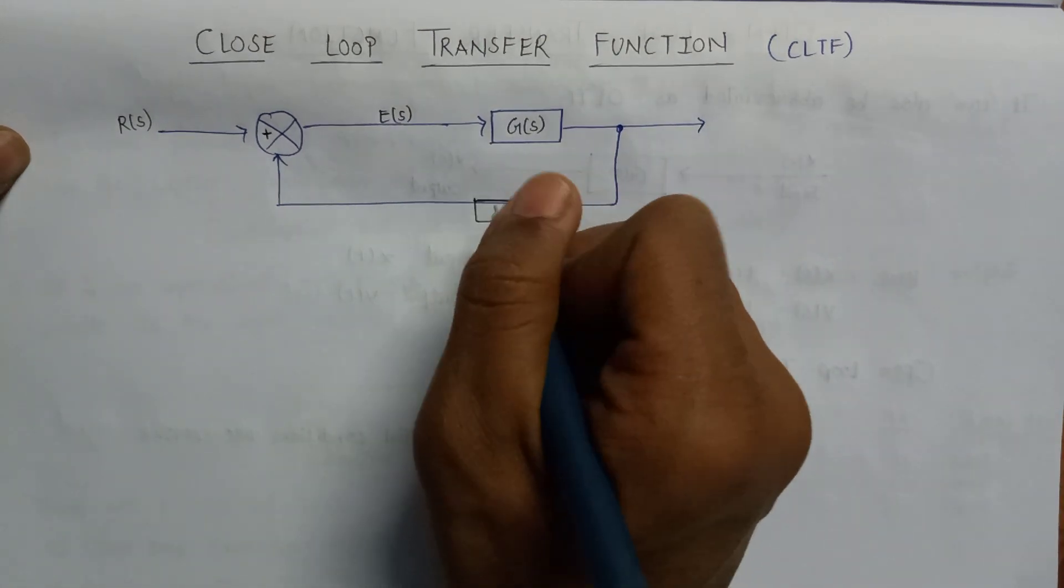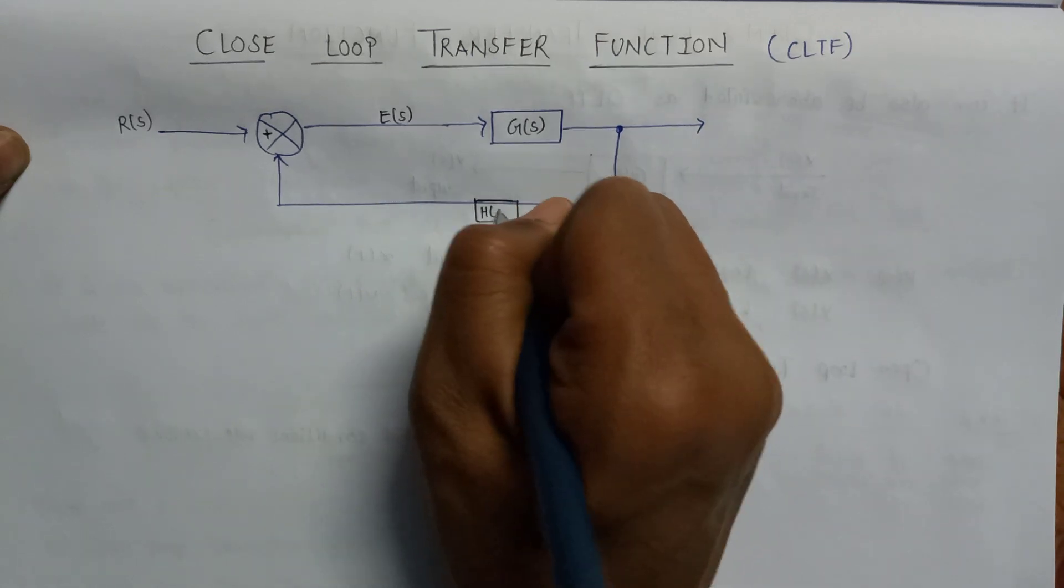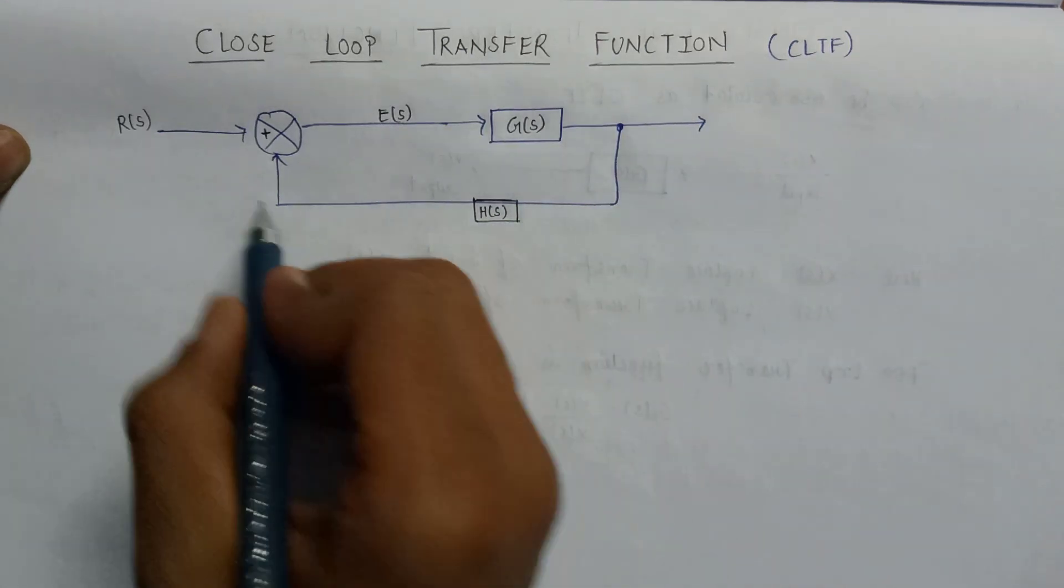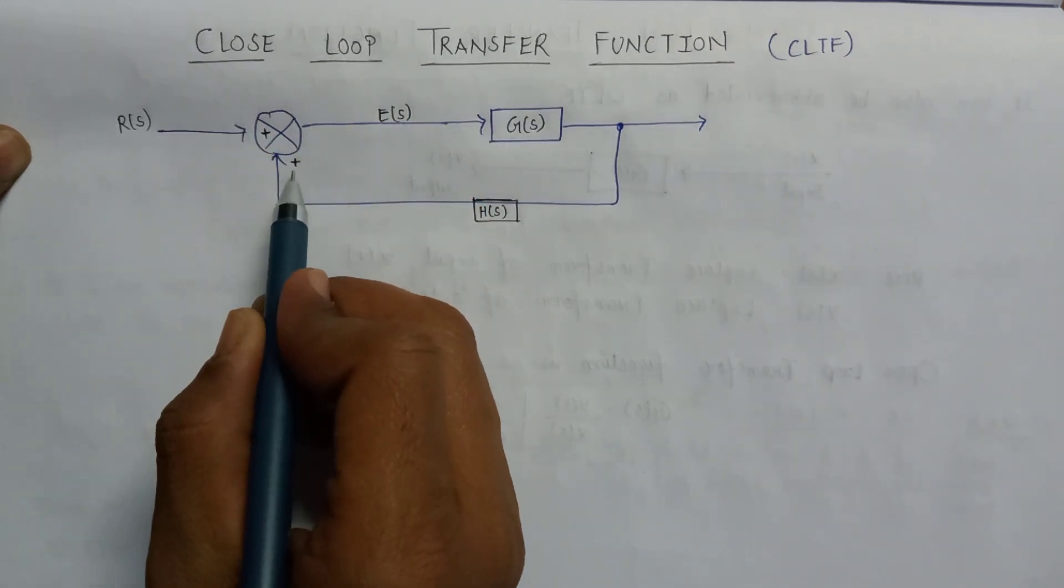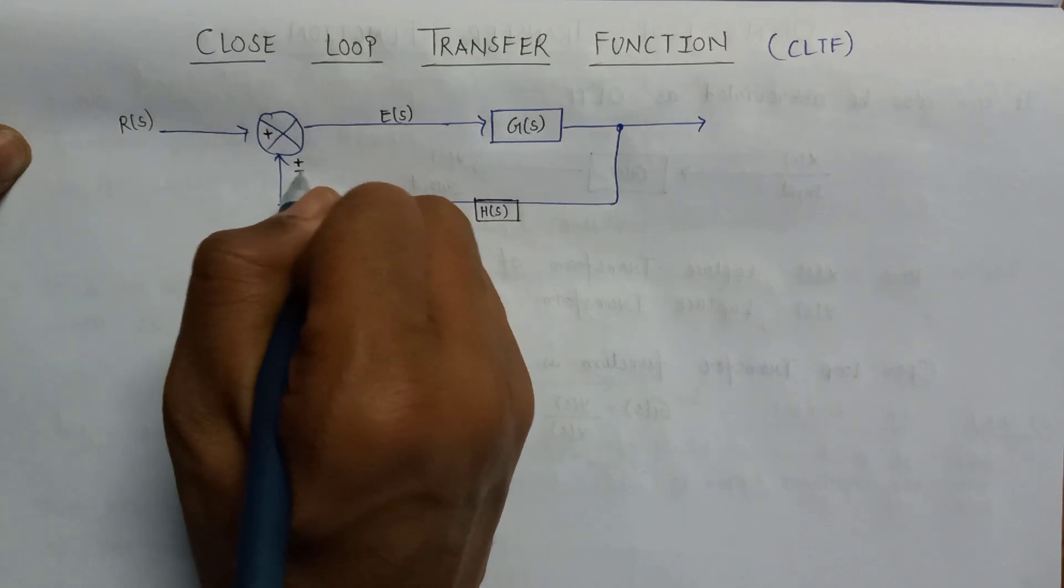If it is having the feedback path gain H, it can be connected with the summer with either positive polarity or negative polarity.